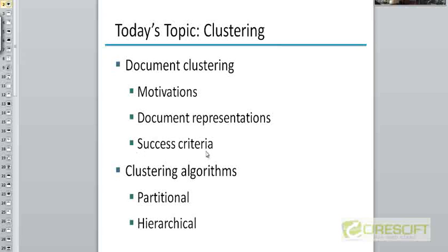The third thing we need to talk about when discussing clustering is how do we evaluate the performance of a clustering algorithm — how do we know that we have a good collection of clusters? But of course, before we discuss performance evaluation, we have to look at what the algorithms themselves are. After looking at what clustering is and how documents are represented, we will look at a couple of different kinds of clustering algorithms, and then see how we can evaluate the performance of clustering algorithms.